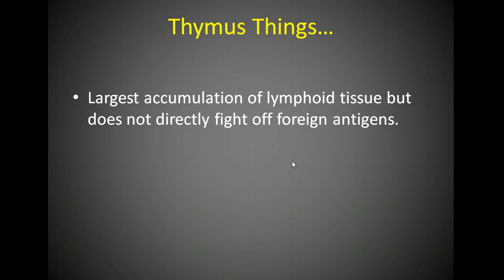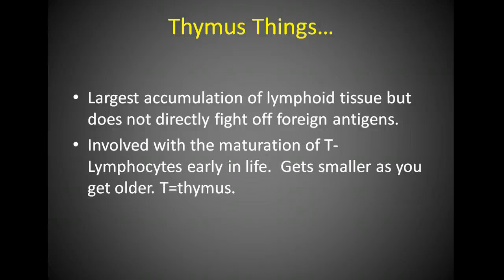The thymus is a large accumulation of lymphoid tissue. It's not involved in attacking foreign antigens — it's involved with the maturation of T lymphocytes early in life. When we get into the immune system we'll talk about T cells and B cells. T cells are those that mature in the thymus, which is why they're called T cells. Early in life, as your immune system is maturing, the thymus is significant and these T cells are developing.